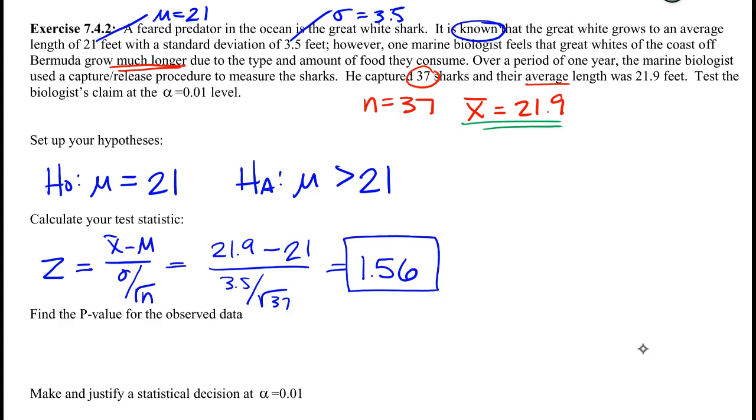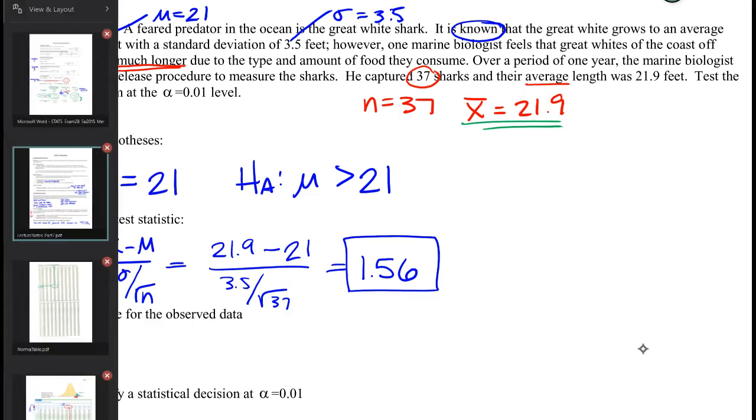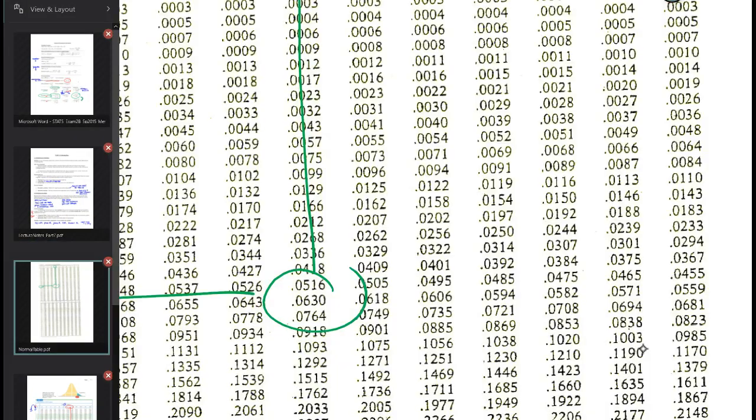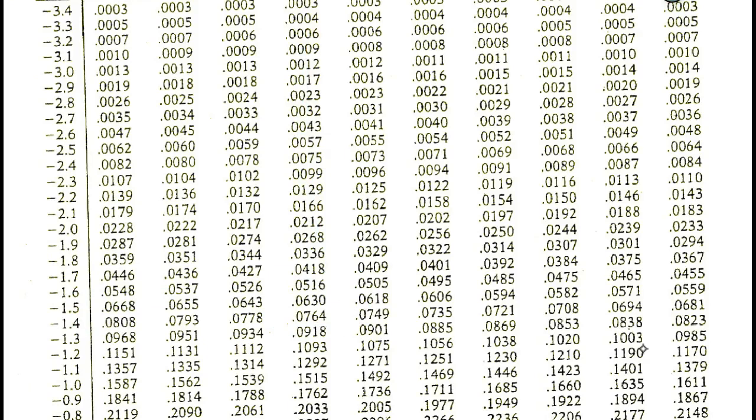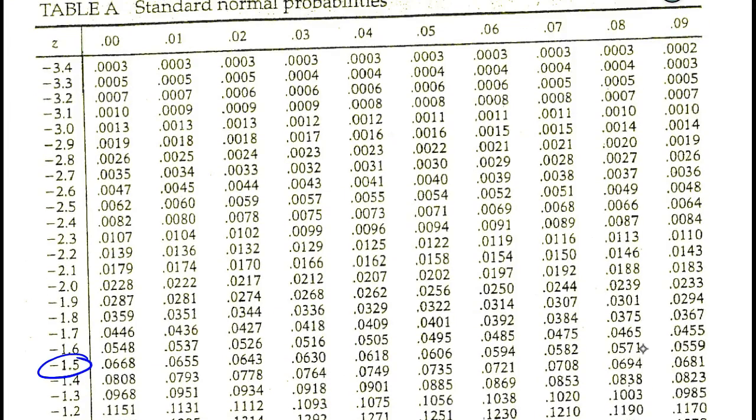Next thing would be to find the p-value. We're doing this by hand, we're going to the table. It's a z so we're going to go to the z table. Remember I only like to look in the negative side of the z table, so we're looking for negative 1.56: 0.0594.